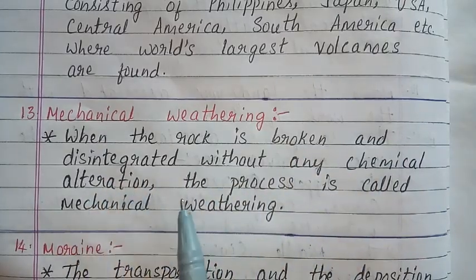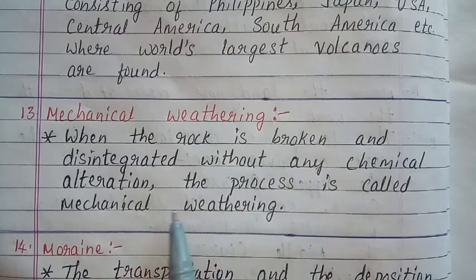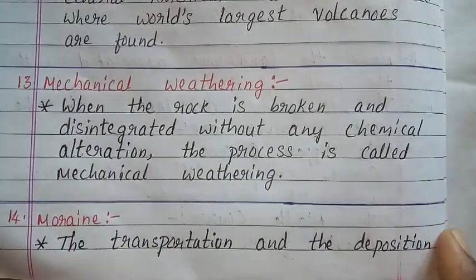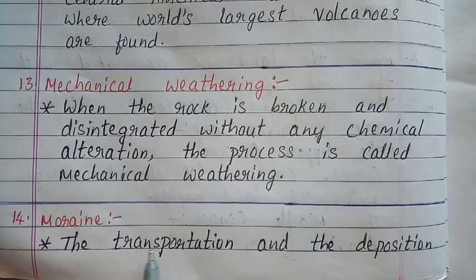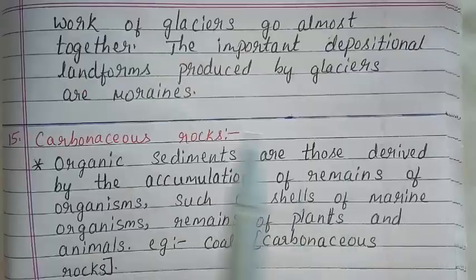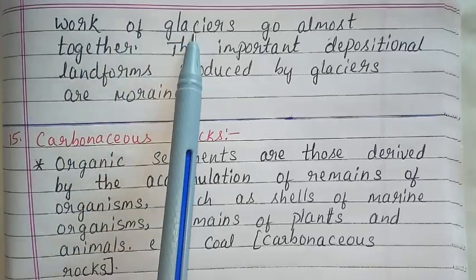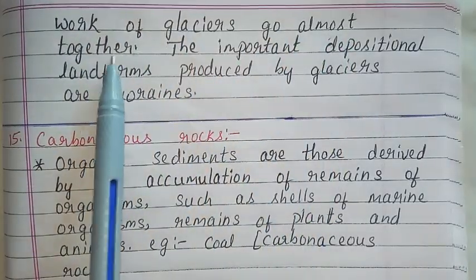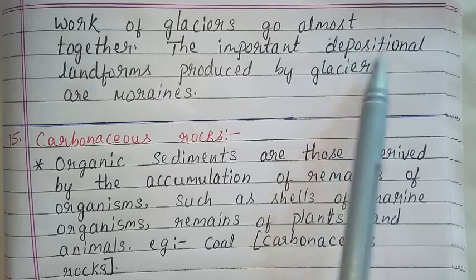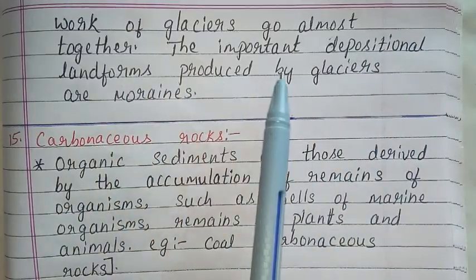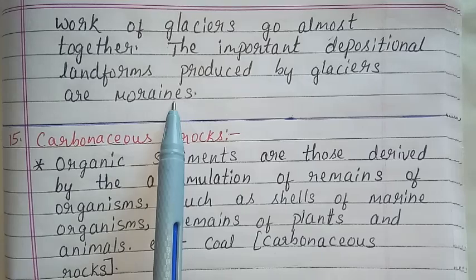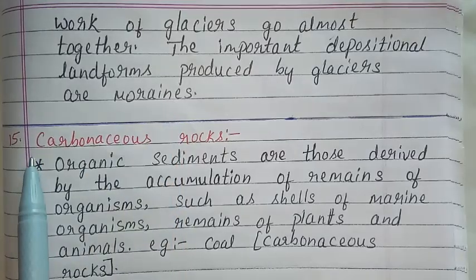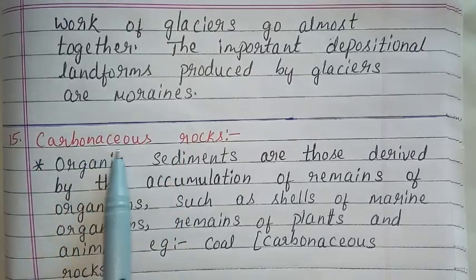Question 13: Mechanical weathering. Answer: When a rock is broken and disintegrated without any chemical alteration, the process is called Mechanical weathering. Question 14: Moraine. Answer: The transportation and deposition work of glaciers go almost together; the important depositional landforms produced by glaciers are called Moraines.